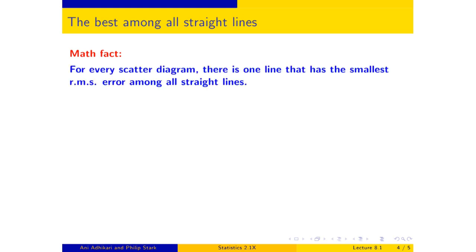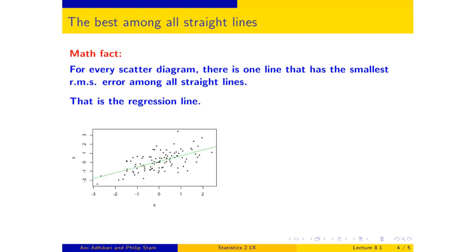It turns out that for every scatter diagram, one line beats all the others in terms of RMS error. It has the smallest RMS error among all straight lines. And which straight line is that? It's the regression line. That is why the regression line is used rather than any other. It is the least squares line. It makes the smallest mean squared error among all straight lines.